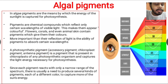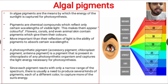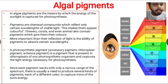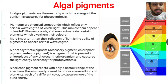Photosynthetic pigments like chlorophyll are present in the chloroplast of any photosynthetic organism and capture the sunlight energy necessary for photosynthesis. There is essentially a need to produce several kinds of pigments, each of a different color, to capture more of the sun's energy, because one pigment only captures one particular wavelength of light. To capture different wavelengths, algae must have different pigments.